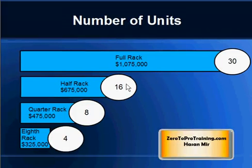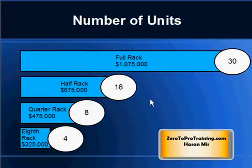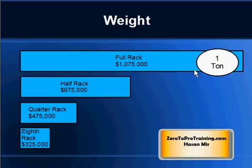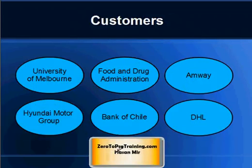These are fixed models — you cannot do a fully custom configuration, which is one criticism people have of ExoLogic. However, even if you need, say, ten servers, you choose eight or sixteen, and the good thing is it can be upgraded on-site if needed. For curiosity, a full rack weighs about one ton. Customers that have implemented Oracle ExoLogic include the University of Melbourne, the Food and Drug Administration, Amway, Hyundai Motor Group, Bank of Chile, and DHL courier service.